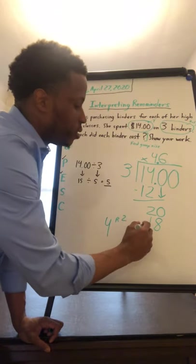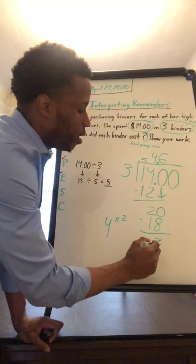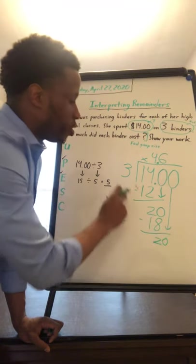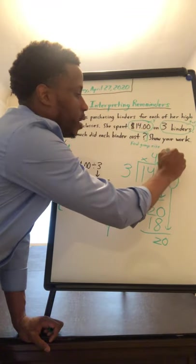So when I subtract, I get two again. I bring down the next zero. And again, three fits into 20 six times.